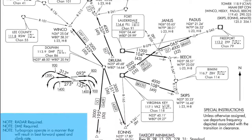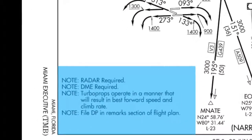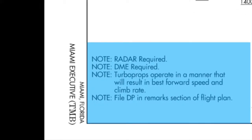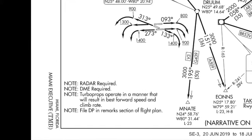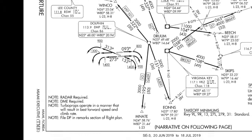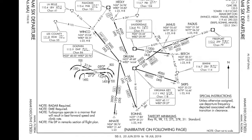If you continue reading on the bottom part of the chart, you'll see notes saying radar required, DME required, turboprop — operate in a manner that will result in best forward speed and climb rate — and to file the DP in the remarks section of the flight plan. All of those notes you want to be careful for; there may be restrictions for prop airplanes or noise abatement procedures.